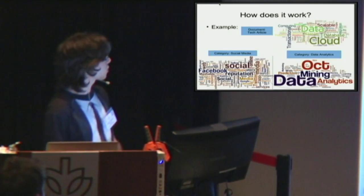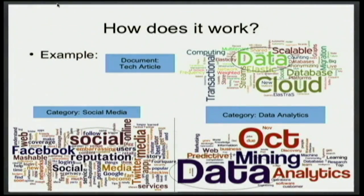Here's a full example. Let's say you've trained categories for social media and data analytics. Then you want to classify this document you found online that's a tech article. You notice that the word social appears frequently, but the word data appears a lot more. And so that's why it would get categorized as data analytics.